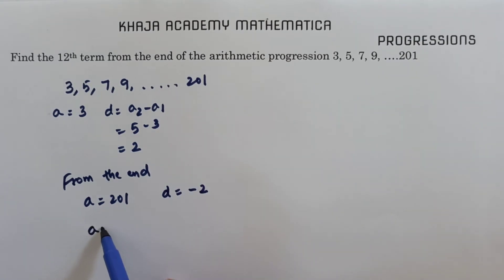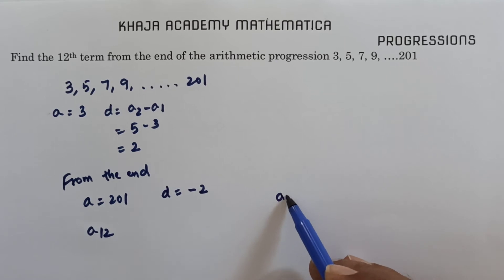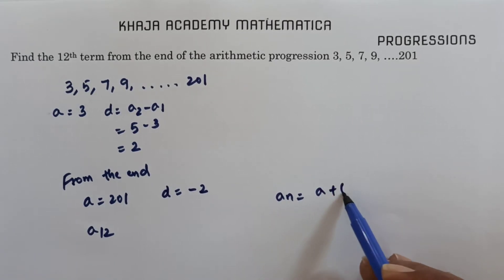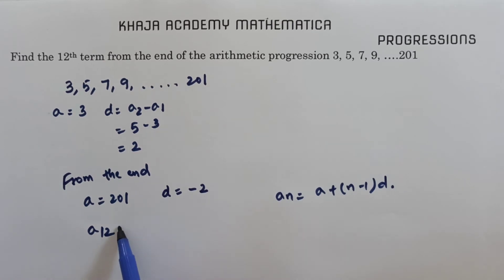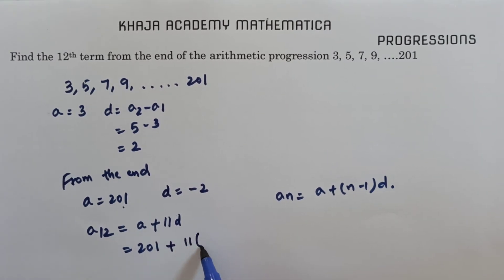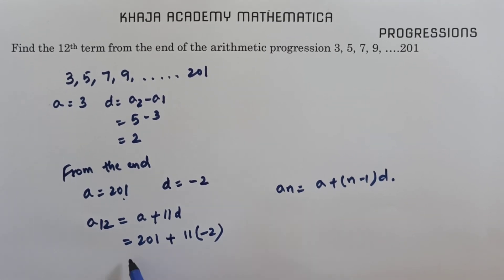Now you need to find the 12th term. The nth term formula is a plus n minus 1 times d. Here a12 will be a plus 11d. So a is 201 because from the end the first term is 201, and d is minus 2.